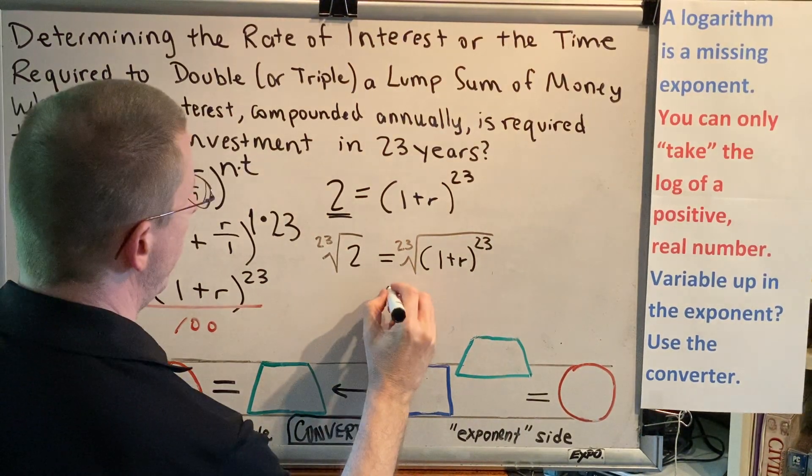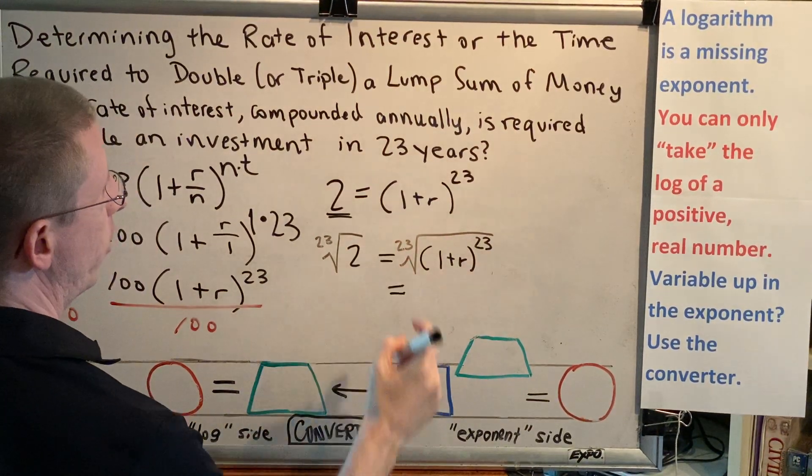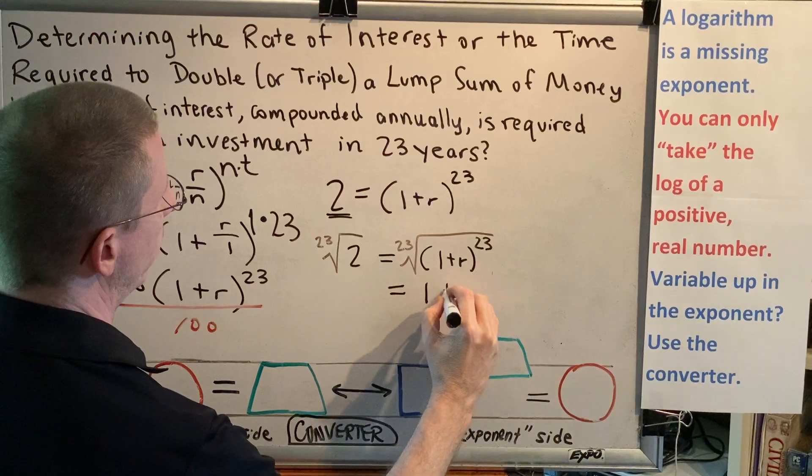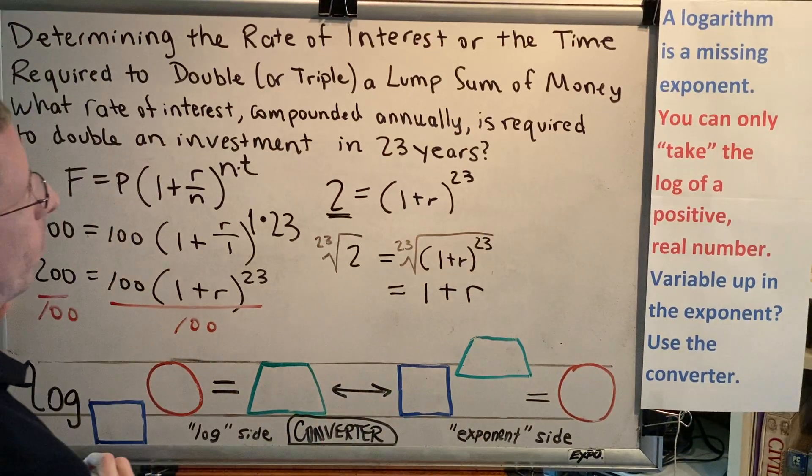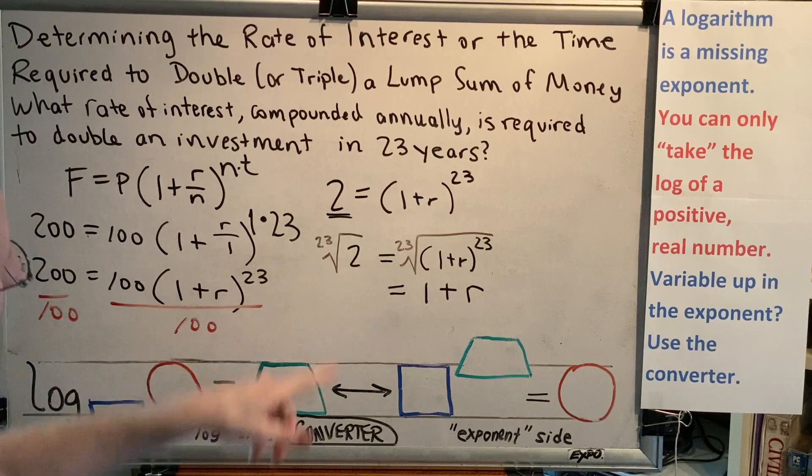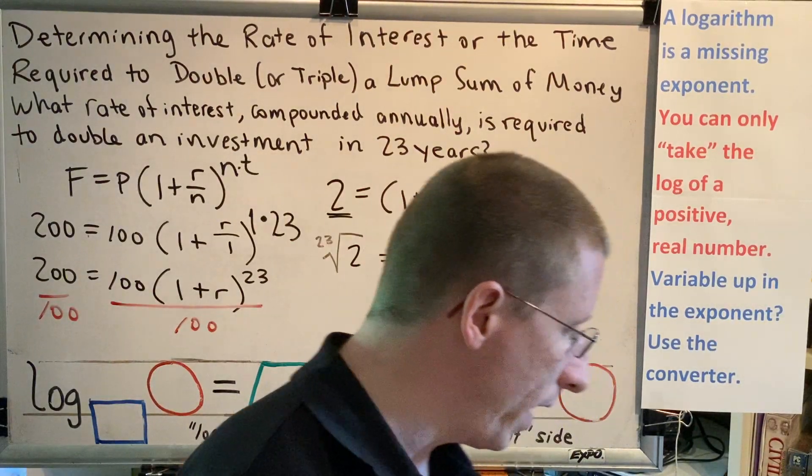Okay, so on the right-hand side, the 23rd power and the 23rd root cancel each other out, leaving us with 1 plus R. And on the left side, I need to figure out how do I put the 23rd root of 2 in my calculator?